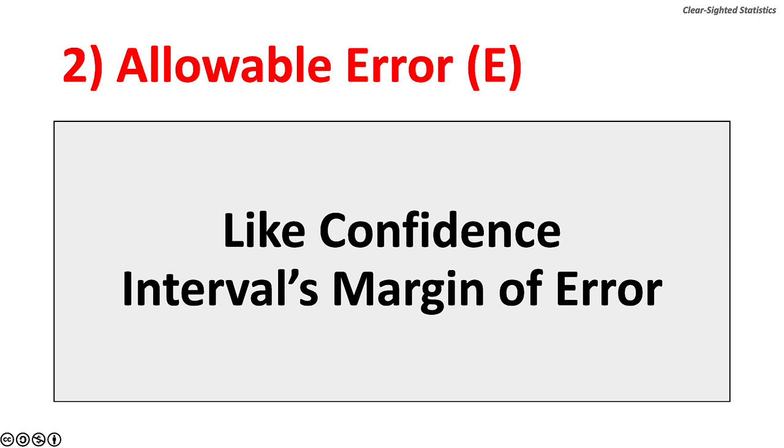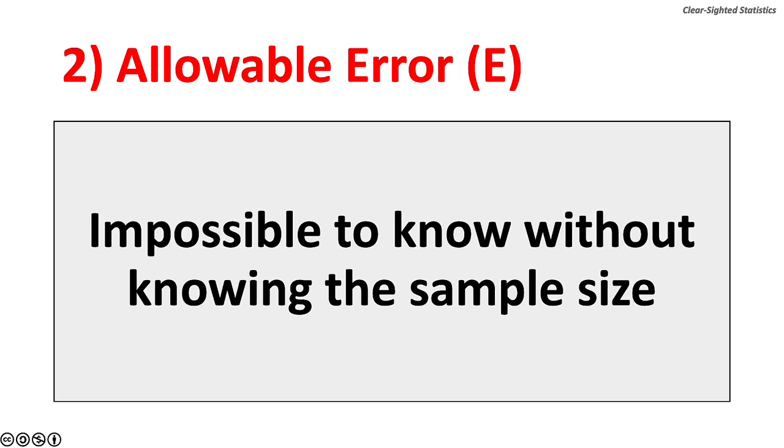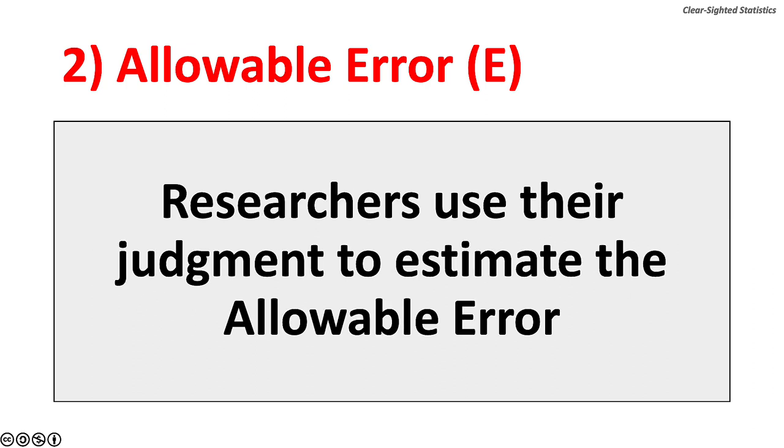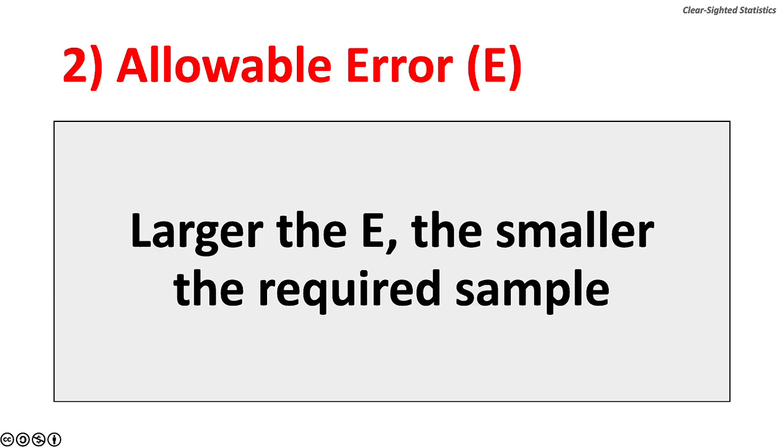Two, the allowable error or E. The allowable error is like the confidence interval's margin of error. It is impossible to know the actual margin of error without knowing the sample size. Researchers use their judgment to estimate allowable error. The larger the allowable error, the smaller the required sample size.